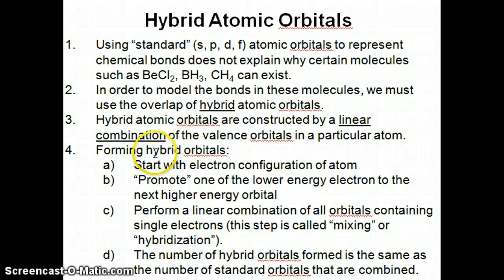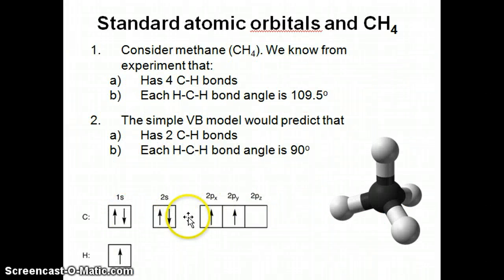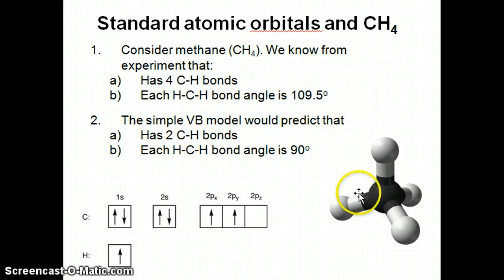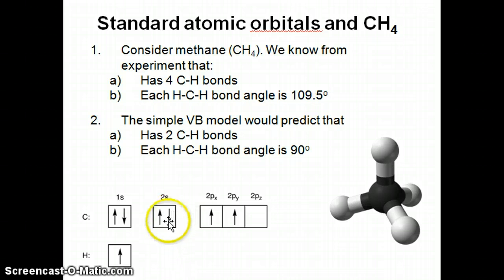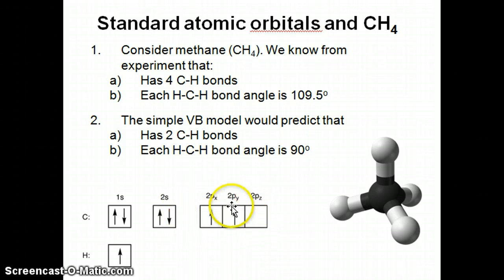The way we're going to form hybrid orbitals is as follows. We start by looking at the electron configuration of the atom of interest — in this case, carbon. We look at carbon and think about how we can rearrange this electron configuration to form a carbon atom that can form four bonds, because right now with the standard configuration we can only form two bonds. If we take one of the electrons in the s orbital and move it to the empty p orbital, we should have four single electrons: three in the p orbitals and one in the s orbital.